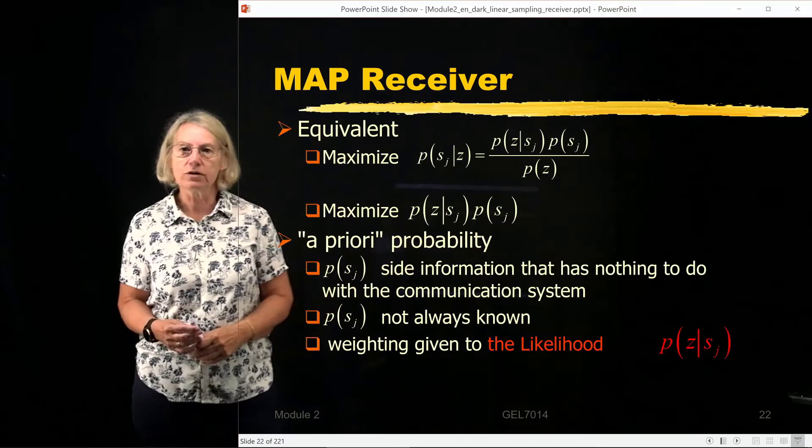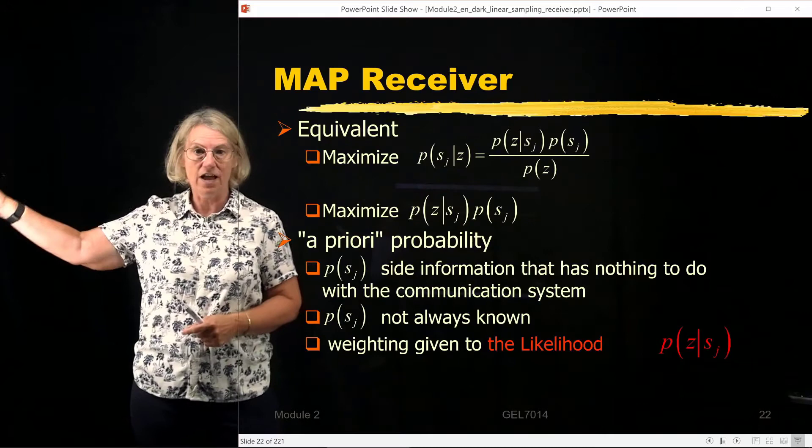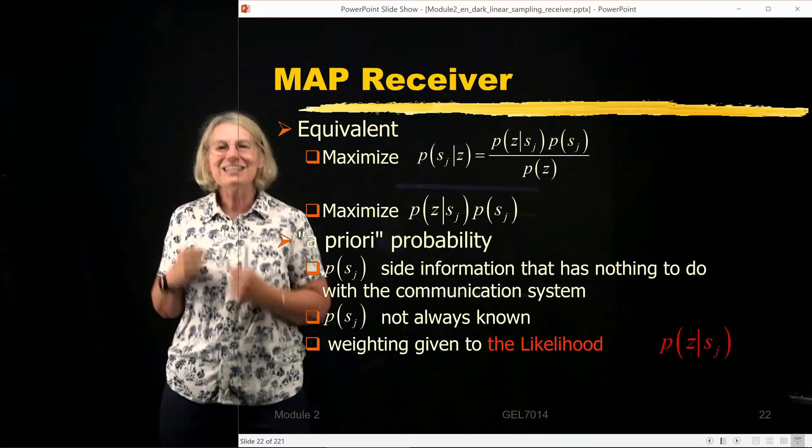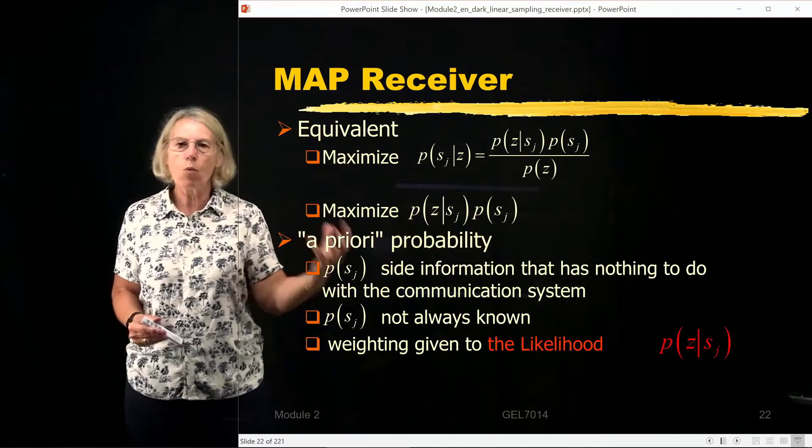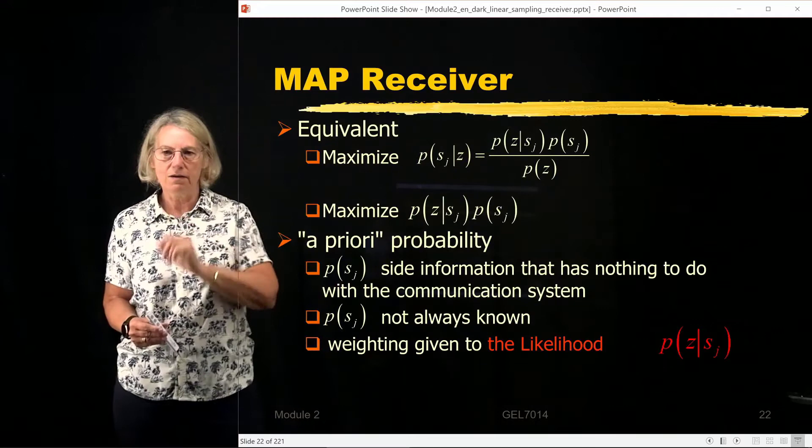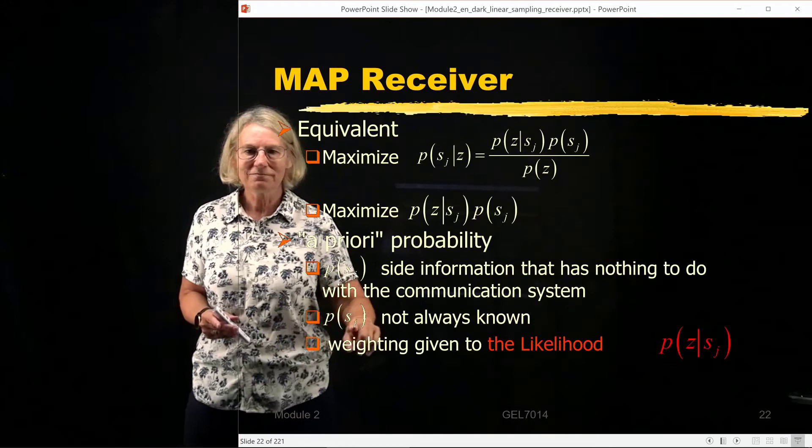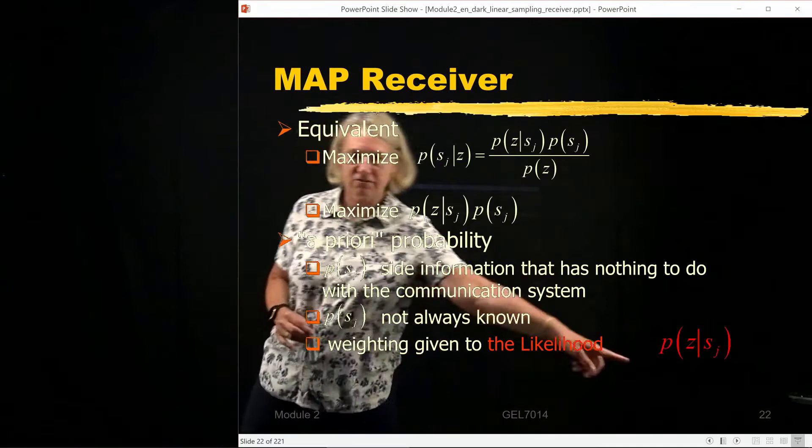So we can see the importance of the a priori probability in the MAP receiver because it is directly multiplying this likelihood function. So the probability a priori is side information. It's insight that we have based on our knowledge of what the data is like. So if I know the 0 is much more likely than the 1, well then I kind of like to push my decision towards the 0. And not in all cases, but in some cases. So we can think of this as being like a weight. A weight that's multiplying by this conditional probability. So the larger this a priori probability is, it's going to force this product to be more likely to be the larger one. But again, I say that that is not always known. So the MAP receiver, if the a priori probability is known, it uses it and it's a weighting that's given to the likelihood function. So this is the likelihood function, what we've written here, and the a priori weights that likelihood function.